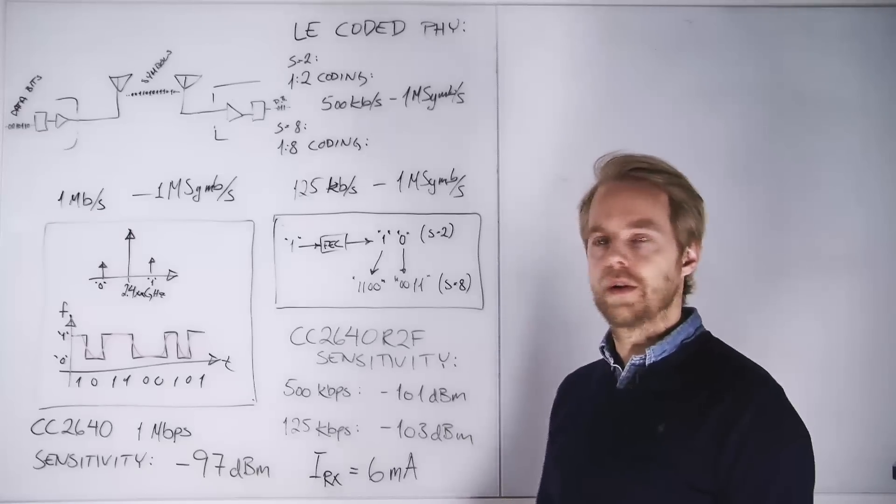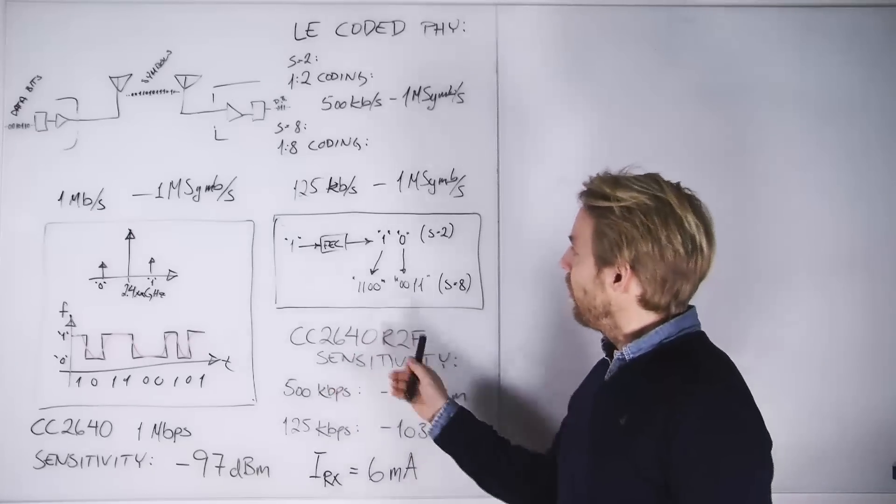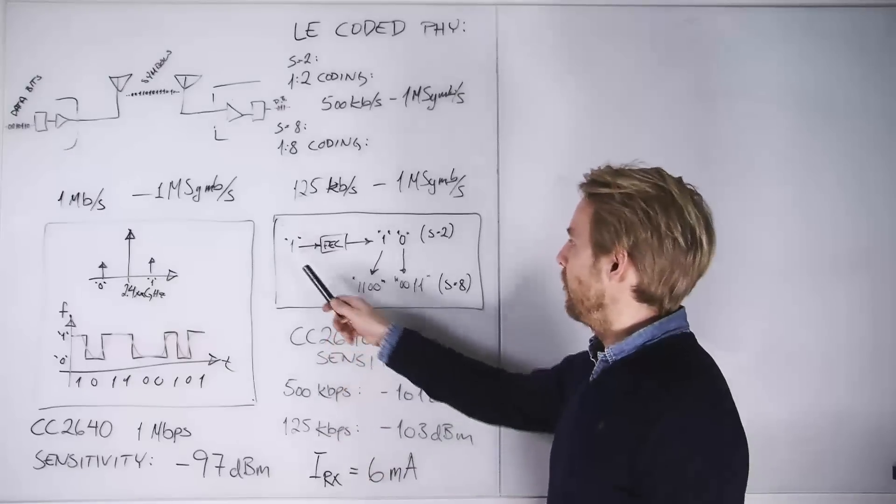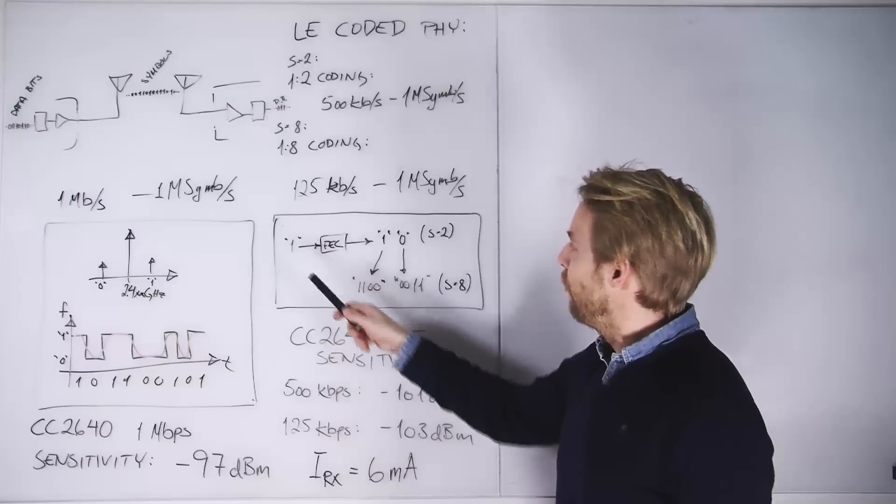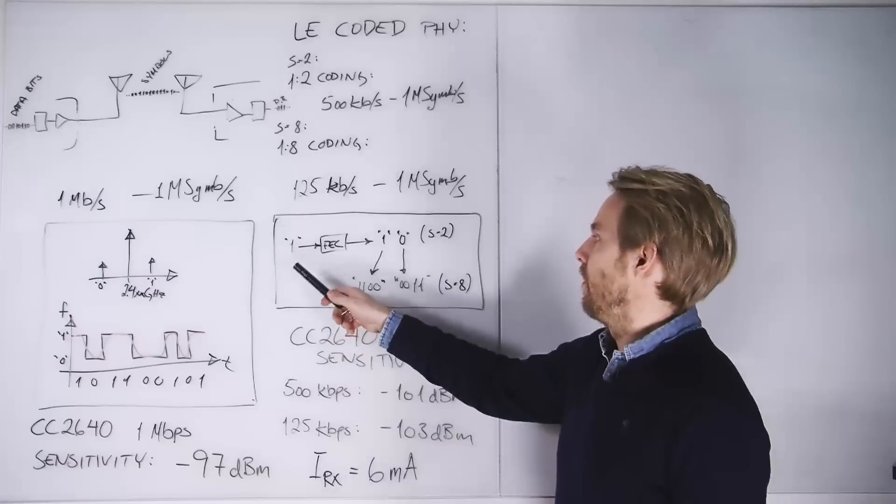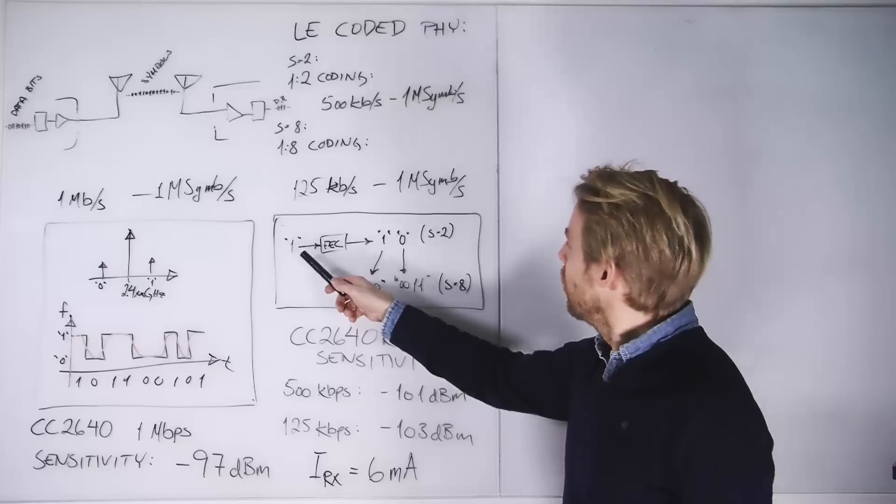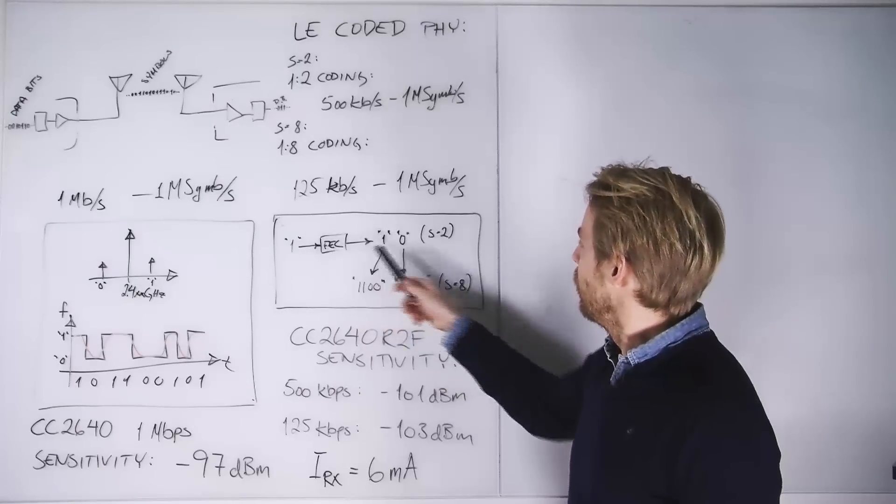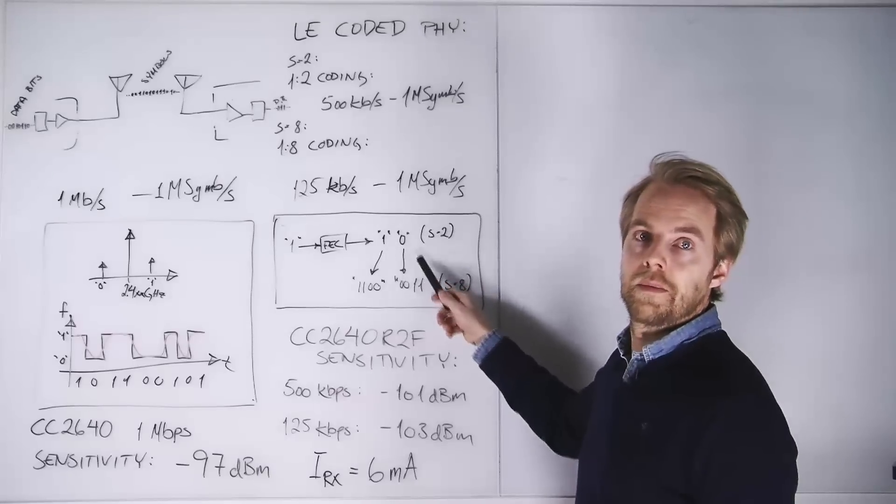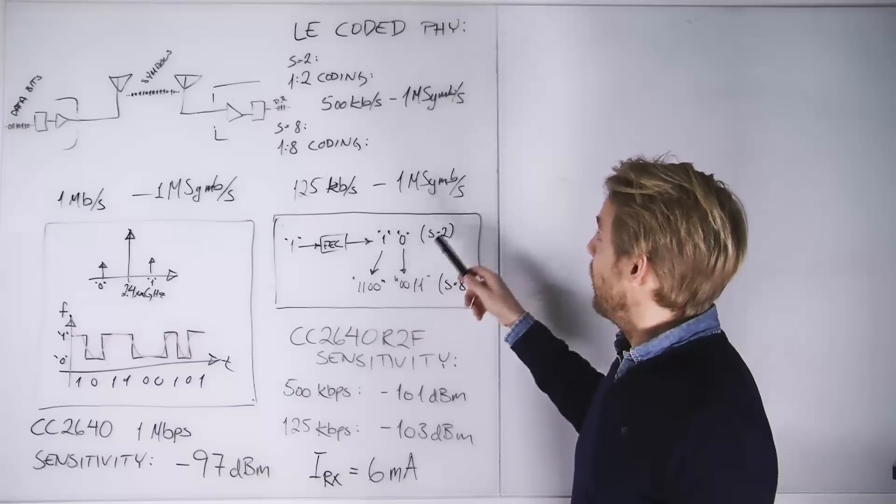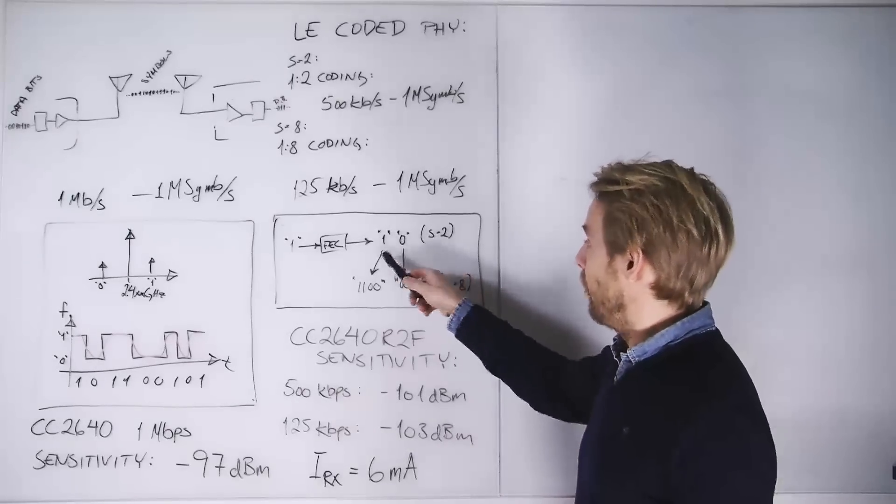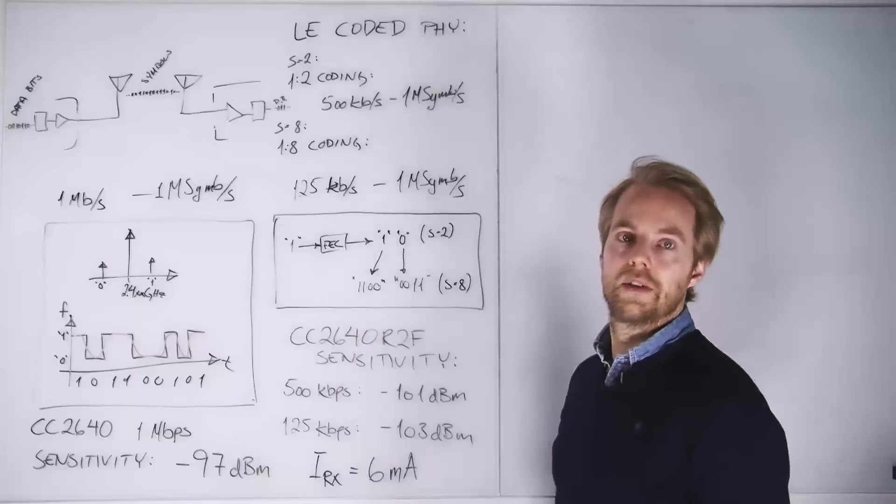So how does this work? Well consider a data bit stream and let's take one random bit in that bit stream. We run forward error correction on the data bits. So in this case, let's take a one. Going through forward error correction will yield two bits instead. And for the S equals two, or two symbols per data bit, we use these two directly to represent this single data bit.